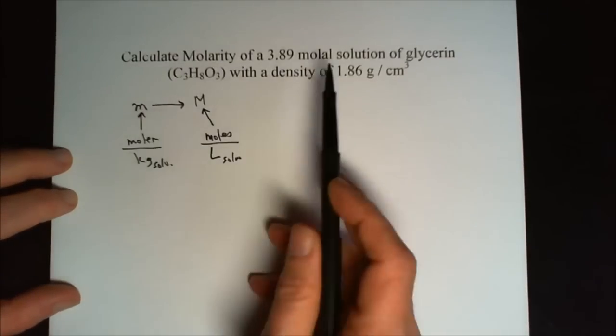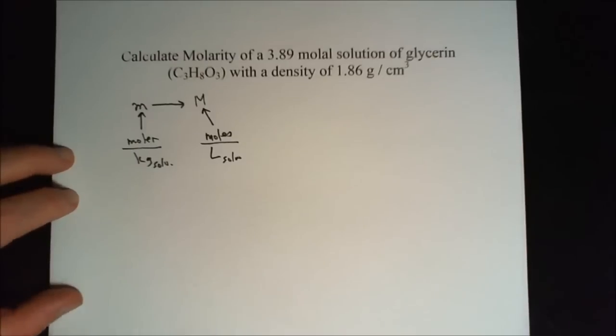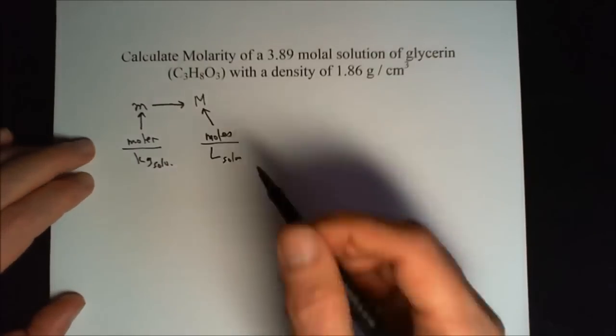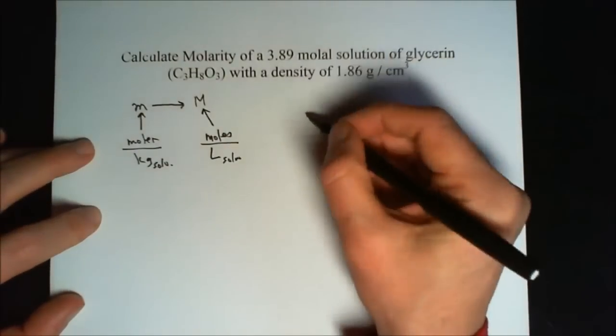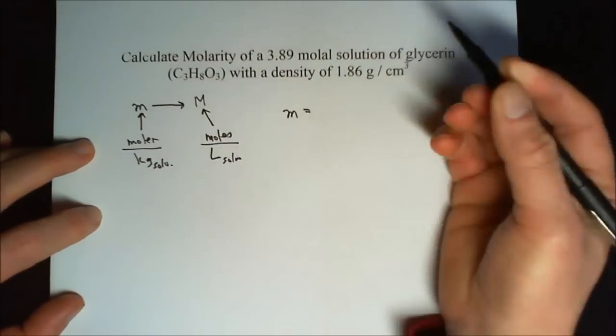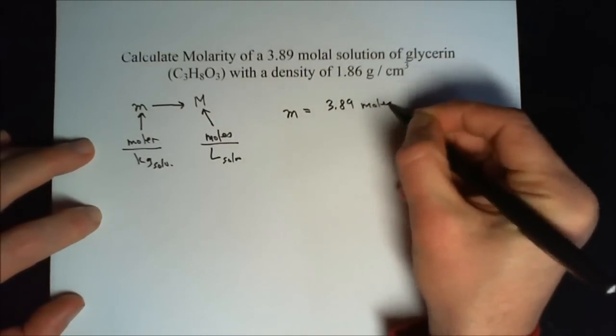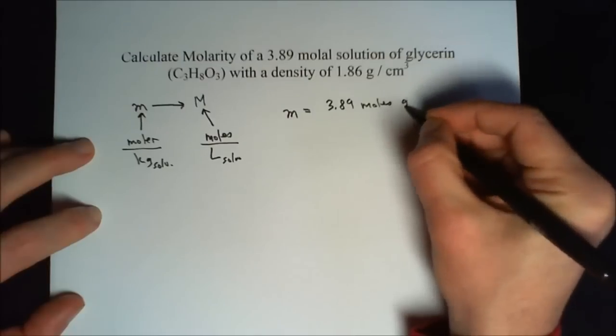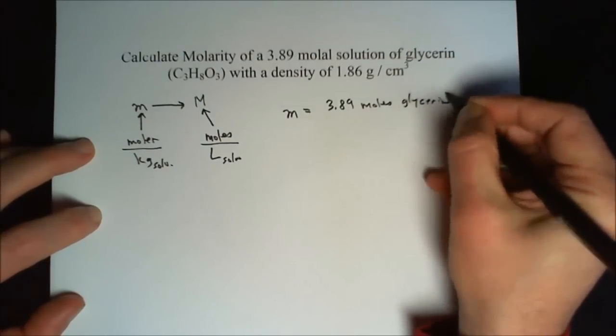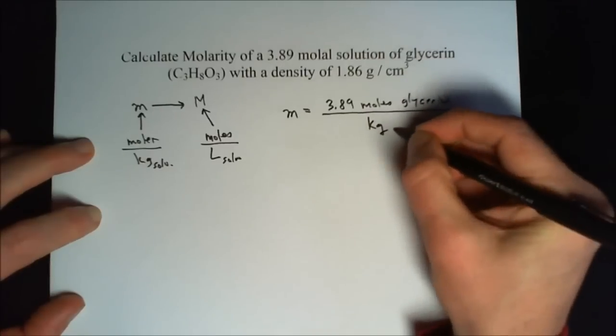So we want to go from molals to molarity of the solution. First thing we notice is that our molality here is 3.89 moles of glycerin per kilogram of water.